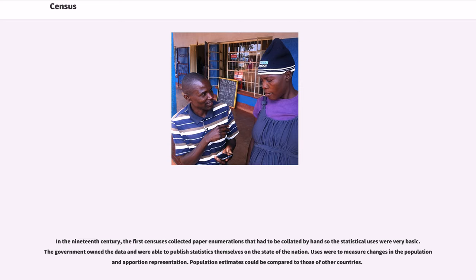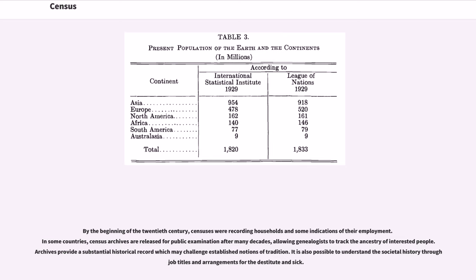In the 19th century, the first censuses collected paper enumerations that had to be collated by hand, so the statistical uses were very basic. The government owned the data and were able to publish statistics themselves on the state of the nation. By the beginning of the 20th century, censuses were recording households and some indications of their employment. In some countries, census archives are released for public examination after many decades, allowing genealogists to track the ancestry of interested people. Archives provide a substantial historical record which may challenge established notions of tradition. It is also possible to understand the societal history through job titles and arrangements for the destitute and sick.